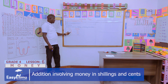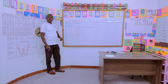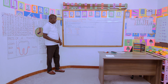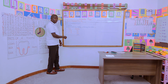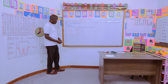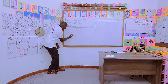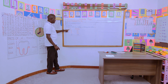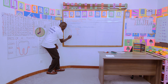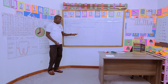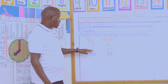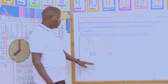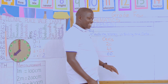Now we come to the shillings side. 18 shillings and 12 shillings — remember, alignment is very key. We start: 8 and 2, we get 10, so write zero here and we carry one shilling to the other side. So we have 1 plus 1 plus 1, we have 3. So 18 shillings and 20 cents plus 12 shillings and 40 cents gives us 30 shillings and 60 cents.